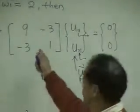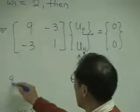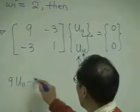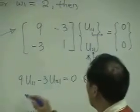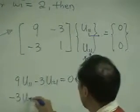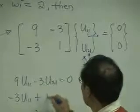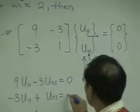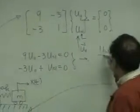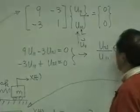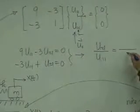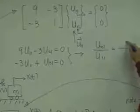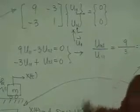Therefore, what I can see is from the first equation is 9U11-3U21 is equal to zero. And the second equation says 3U11 plus U21 equals zero. So, let's give me the ratio between U21 and U11 is what? Three.